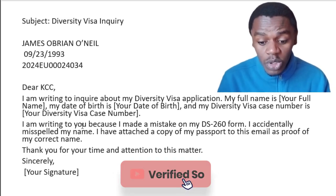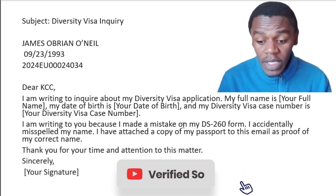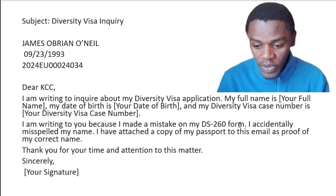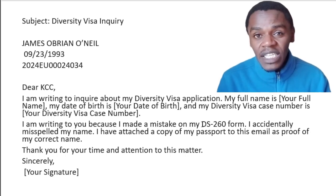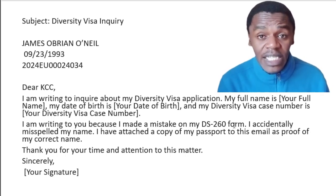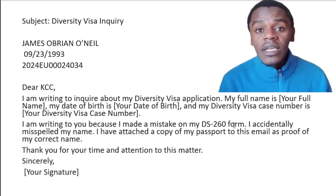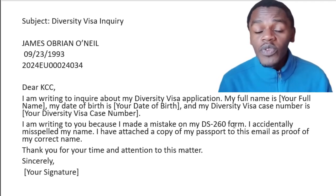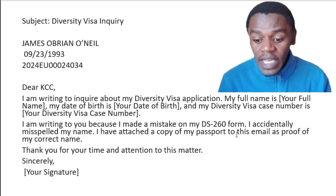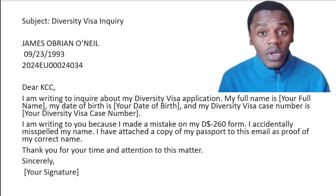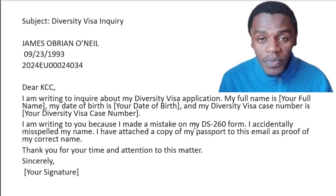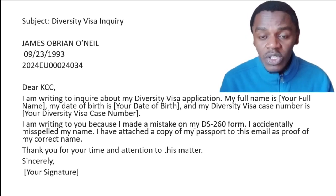You say: I'm writing to you because I made a mistake on my DS-260 form. If you are the principal applicant, you say 'my DS-260 form.' But in case it is the DS-260 of your beneficiary — maybe your wife or your kid — you say 'on my child's DS-260 form,' or if it's your spouse, 'my wife's DS-260 form' or 'my husband's DS-260 form.'